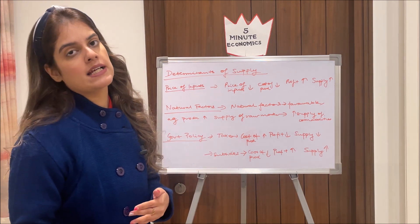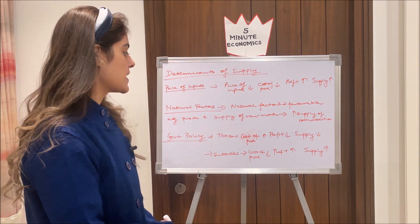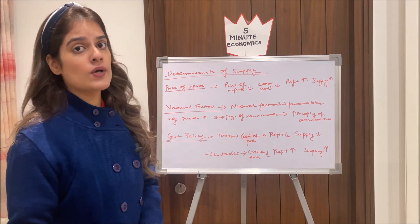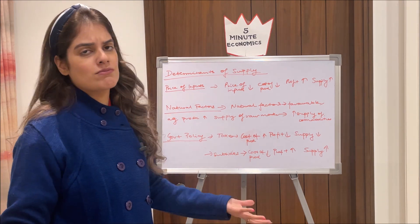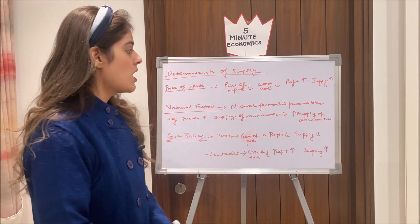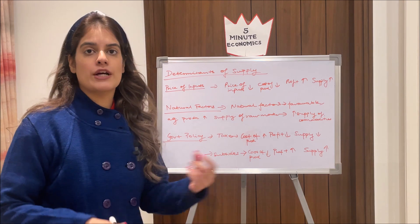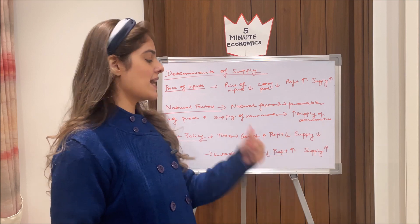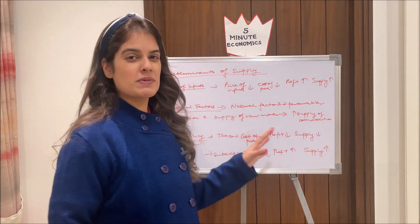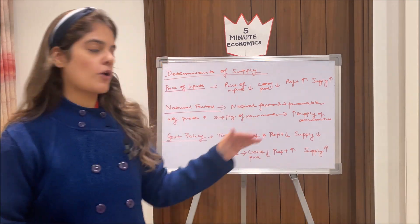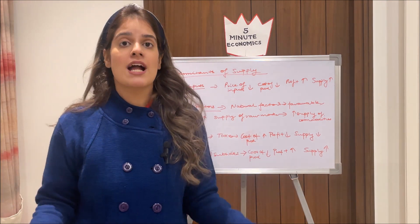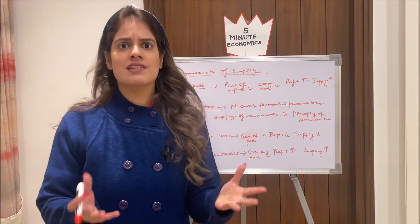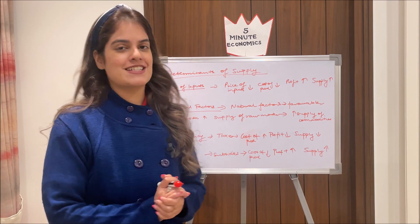Lastly among major determinants, government policy. The government can impose taxes or provide subsidies. When taxes are imposed, the cost of production rises, the profit margin falls, and naturally supply falls. Whereas when the government gives subsidies or other benefits, the cost of production falls, the profit margin rises, and supply rises. Remember this chain: cost of production → profit → supply. If you remember this chain, it becomes very easy.